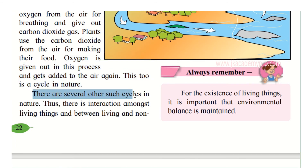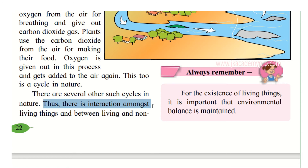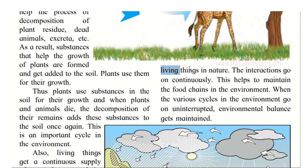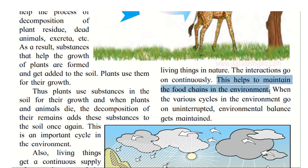So there are three cycles: the nutrient/plant cycle, the water cycle, and the oxygen-carbon dioxide gas cycle. There is interaction amongst living things and between living and non-living things — they need each other and the interaction goes on continuously through thousands of years. This helps to maintain the food chain in the environment.